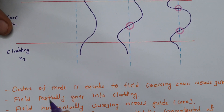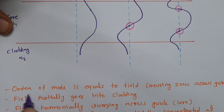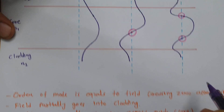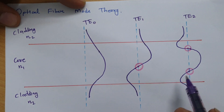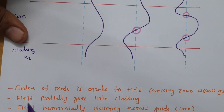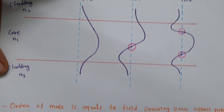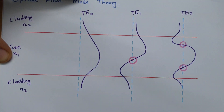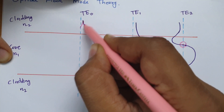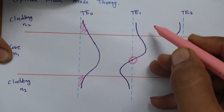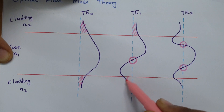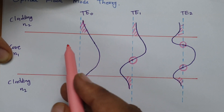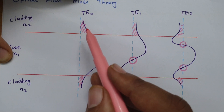Let us discuss a few basics regarding mode theory. The order of a mode equals the number of times the field crosses zero across the guide — and the guide is the core. Now, the field partially goes into the cladding. When we plot the field, one can observe that in all modes, the field is partially going into the cladding.